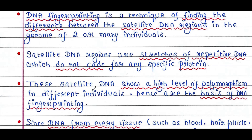Satellite DNA shows a high level of polymorphism in different individuals, and hence forms the basis of DNA fingerprinting. Polymorphism means variation. DNA fingerprinting works on this satellite DNA and reveals how it differs between individuals.